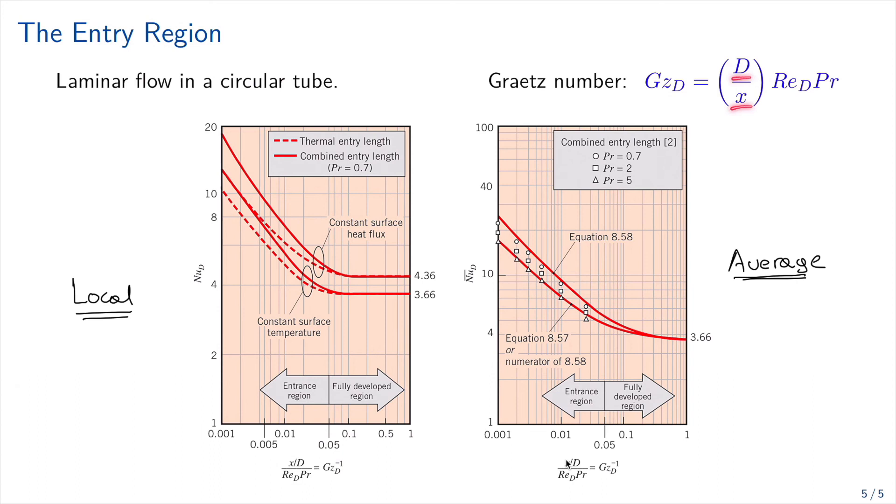Which is the Gratz number. So the Gratz number is defined in terms of Prandtl, Reynolds, the diameter, and x. So we have here the inverse of the Gratz number. And on the y-axis, we have Nusselt, Nusselt D.